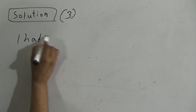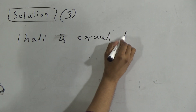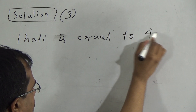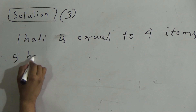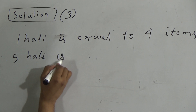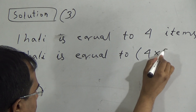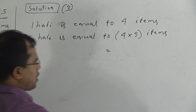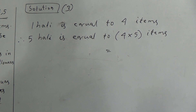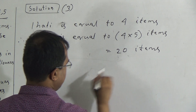Question number three: one Hally is equal to four items. Therefore, five Hally is equal to 4 multiplied by 5 items. Here, 5 ones are 5, 5 twos are 10, 5 threes are 15, and 5 fours are 20. It will be 20 items. And the answer will be 20 items.